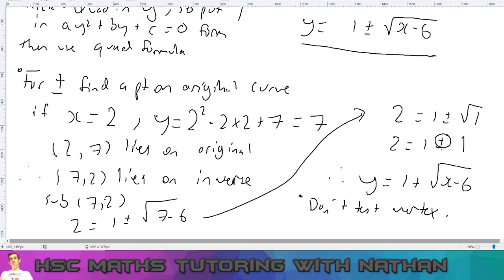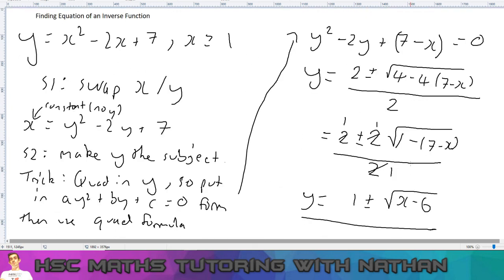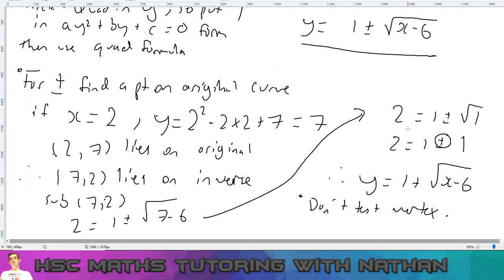So that's the process to find the equation of an inverse function and the most popular trick I've seen in these examples, where you have to have a quadratic in y and you just use the quadratic formula like this. And then you test the point from the original. Remember, the inverse means swap x and y. So if there's anything you're unsure, make sure to comment below. Otherwise, if you enjoyed today's video, make sure to give us a like and subscribe for future videos. And also comment below what you'd like to see in the future. Otherwise I'll see you in the next video.